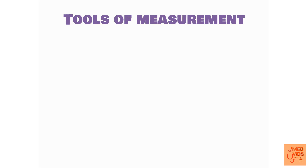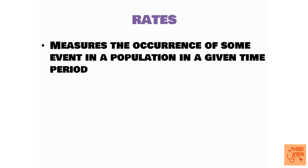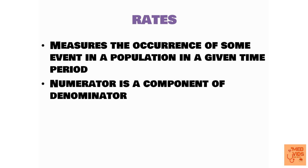The basic tools used in measurement in epidemiology are rates, ratios, and proportions. Rates measure the occurrence of some event in a population in a given time period. The numerator in rates is actually a component of the denominator — this is a key differentiating point from ratios. For example, in death rate, we calculate the number of deaths occurring in a population in a given period of time.